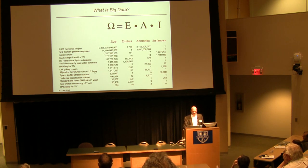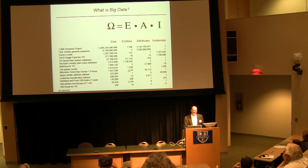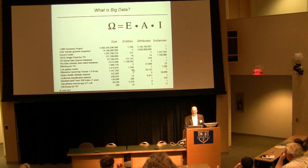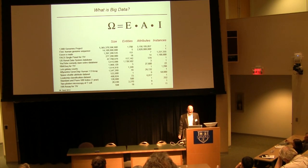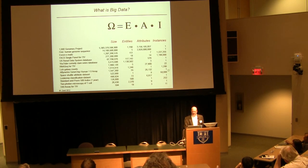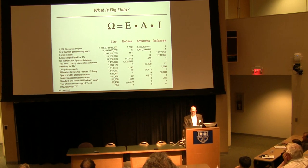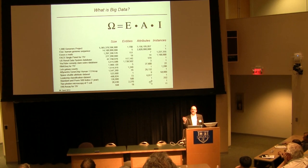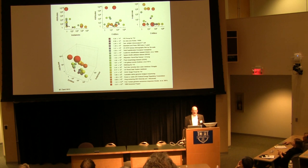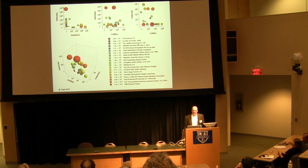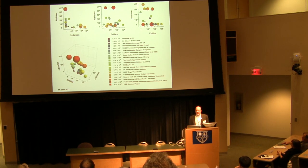If you look at the Affymetrix Human Gene Chip Array — say a mouse series with 11 time points, five mice per time point — you've got 55 mice and about 28,000 attributes, each with only one instance. For two-photon microscopy of a T-cell, you might record 2,200 T-cells but abstract to only nine attributes. Why does this matter? If you plot attributes versus instances or entities, it becomes clear that different types of data sets cluster separately from each other.